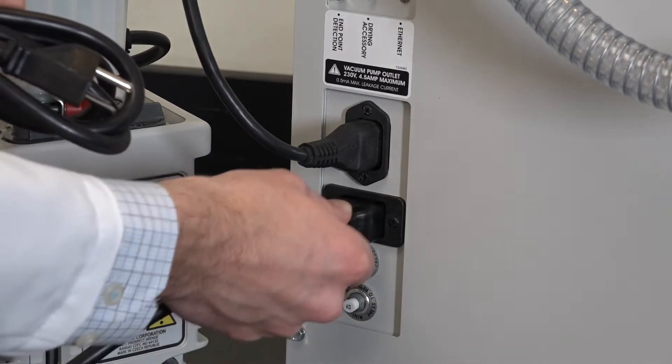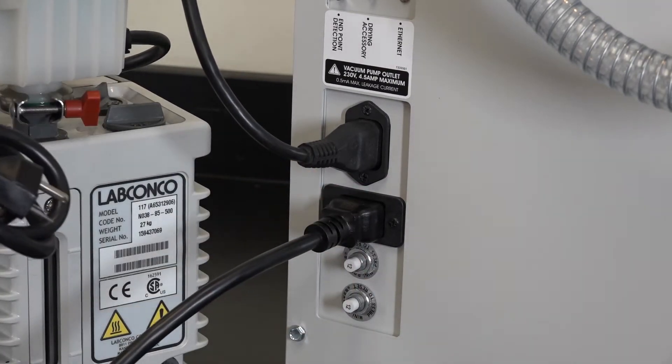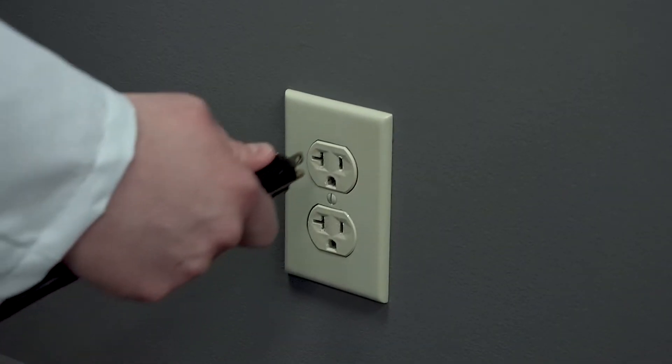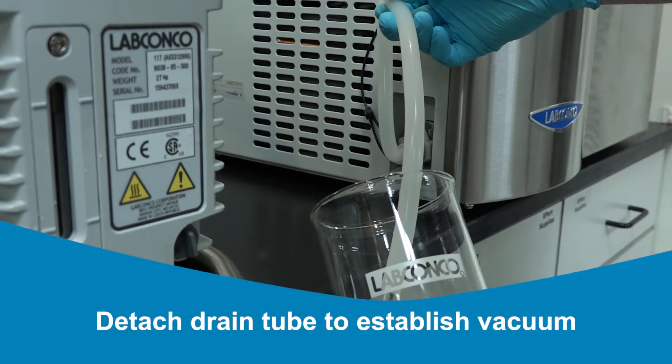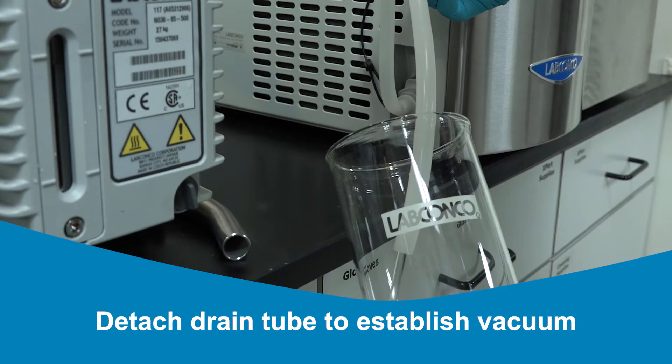Install the power cord into the receptacle on the back of your Freezone and plug the other end of the cord into the electrical wall outlet. The drain fitting should only be inserted when draining the collector, not during lyophilization.